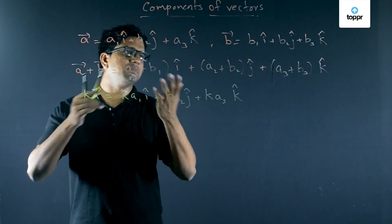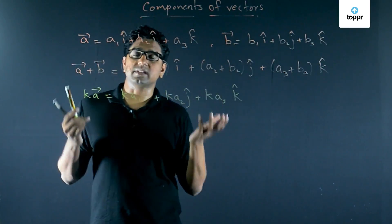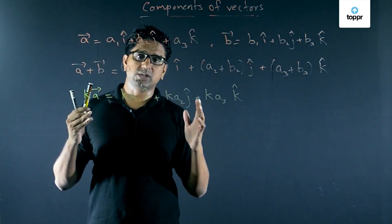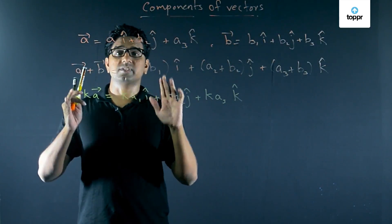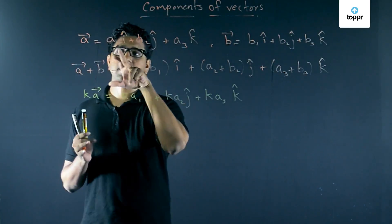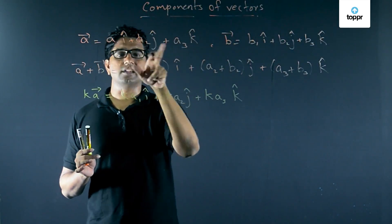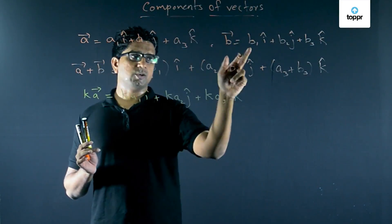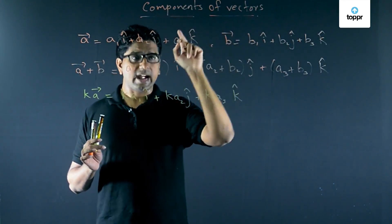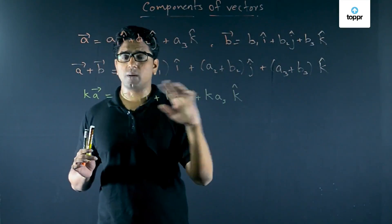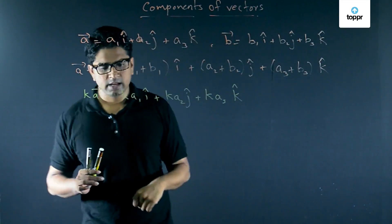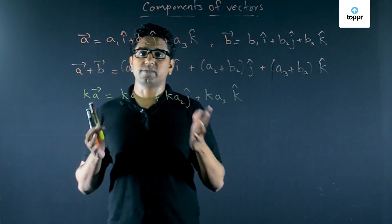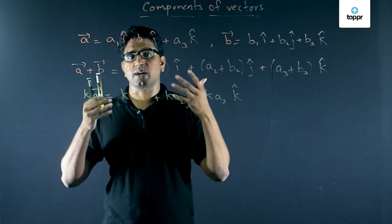When can we say two vectors are equal? Two vectors are equal if and only if all their components are equal. So vectors A and B are equal only if a1 = b1, a2 = b2, and a3 = b3. Even if one component differs, the vectors are not equal.